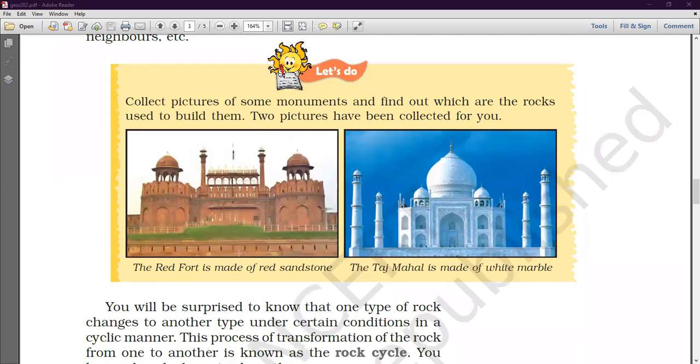So, let's see, there are some examples. Like, what is the red sandstone? What is the red fort? The Taj Mahal is made from white marble.